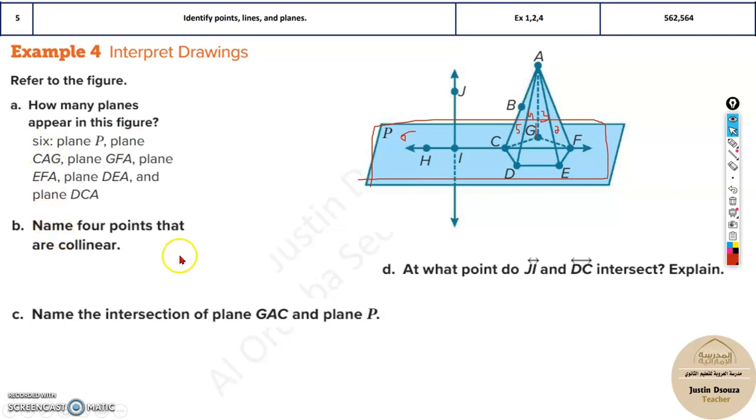Now, name four points that are collinear. So, you need a line which has four points. You can't take this because this has only two. This has only three. Let's see for the line with four points. You can see this line. It has H, I, C, F. So, this is a line which is having four points. So, they are all collinear.